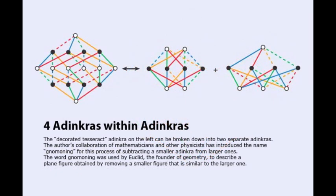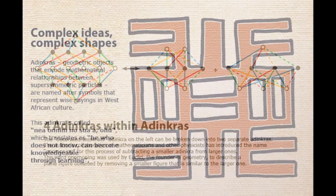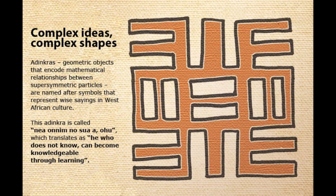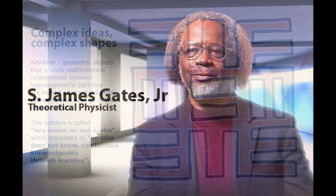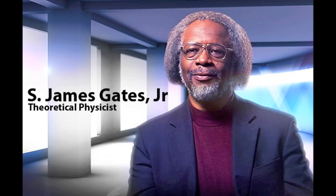Some of those codes are showing on the screen behind you right now. They don't look like codes, but these pictures, which we call adinkras, are graphical representations of sets of equations that are based on codes. In the description of our universe as a supersymmetrical universe — which we were going to test in the LHC — if you believe that description, I can show you the presence of these codes. That's my statement.